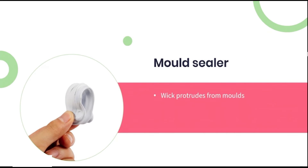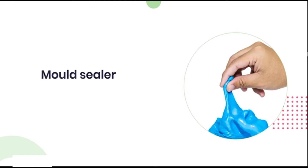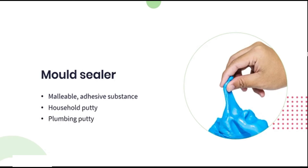When using a mould to make a candle, a section of the wick will protrude from the bottom of the mould towards the outside. Naturally this means there will be a small opening where wax could potentially leak out. In order to stop this leakage we make use of a mould sealer. A mould sealer can be any malleable adhesive substance placed over the wick extending from the bottom of a mould. This can be household putty, plumbing putty, or even children's play-doh — or you can buy professional silicone mould sealer from sites like amazon.com.